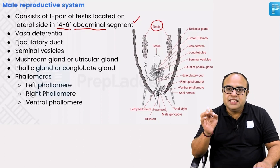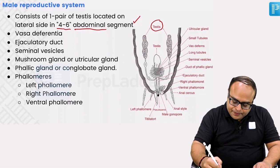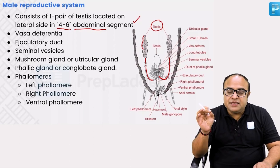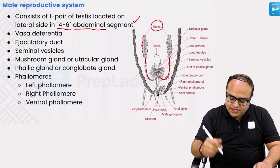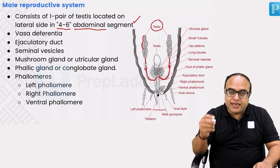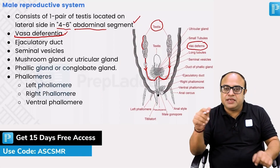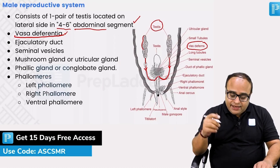To remember: the testes extend from the fourth to sixth segment. From these testes arises a tube known as vas deferens. The vas deferens carries sperms produced in the testes away from the testes. These vas deferens from both sides are meeting at a point.